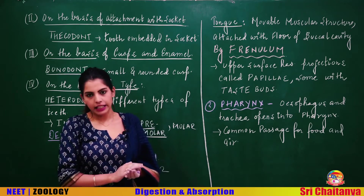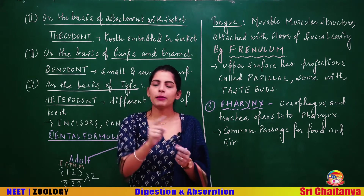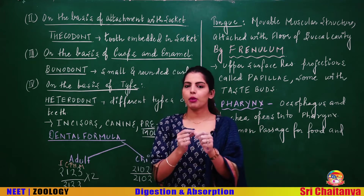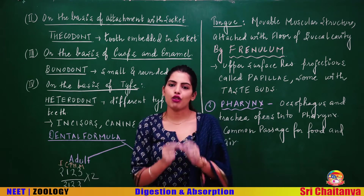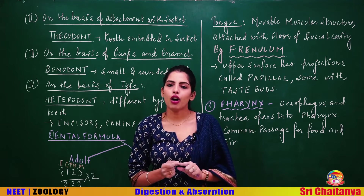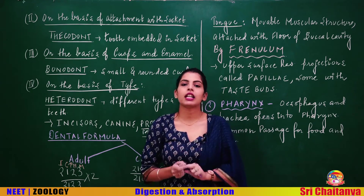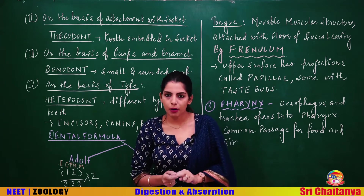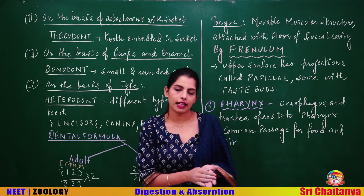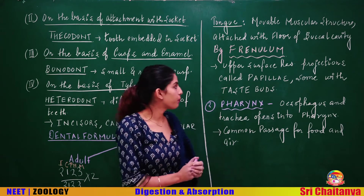To summarize, human dentition is: number one — heterodont (different types of teeth); number two — thecodont (embedded in socket); number three — bunodont (rounded small cusps); number four — diphyodont (two sets of teeth in a lifetime).